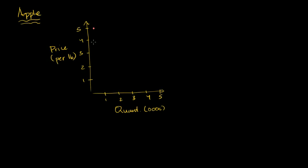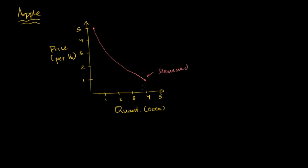The demand is the entire relationship. The actual specific quantity we call the quantity demanded. So at a price of $5, the quantity demanded would be about 500 pounds. Maybe at a price of $1, the quantity demanded would be maybe 4,000 pounds. And so our demand curve might look something like that — that is our demand curve.